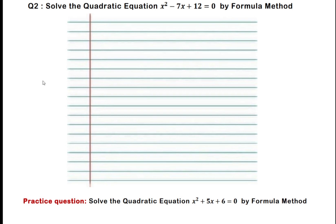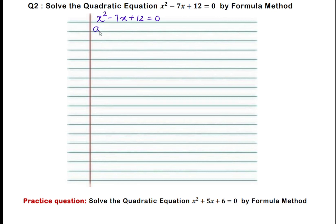The first step is write down the given quadratic equation: x squared minus 7x plus 12 equals 0. Write down the given quadratic equation and find out the coefficients A, B, and C. The value of A, the coefficient of x squared, is 1.